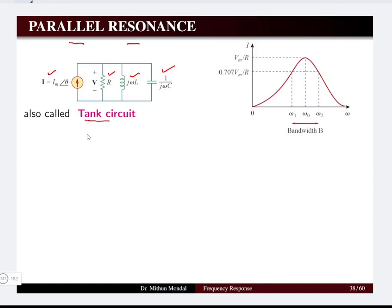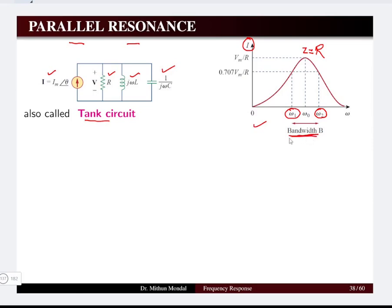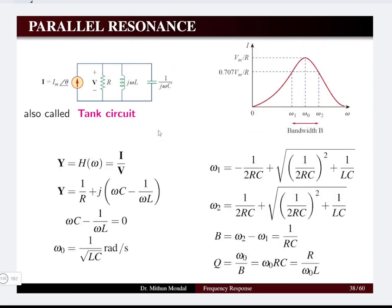The derivation and other aspects will be similar to what we discussed for series resonance. Looking at the waveform of frequency and current, at the resonant frequency the current is maximum, which is Vm/R. At the resonant frequency, the net impedance of the network is resistive in nature, so Z equals R. Here ω1 and ω2 are the half-power frequencies, and the difference ω2 minus ω1 is the bandwidth of the signal.